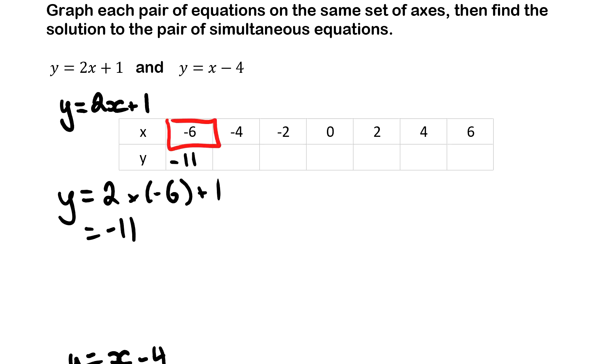You would do the next one so 2 times minus 4 plus 1, that is negative 7, so negative 7 goes next. And you continue until the table is full.